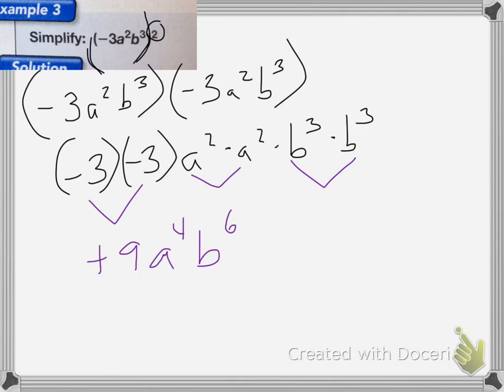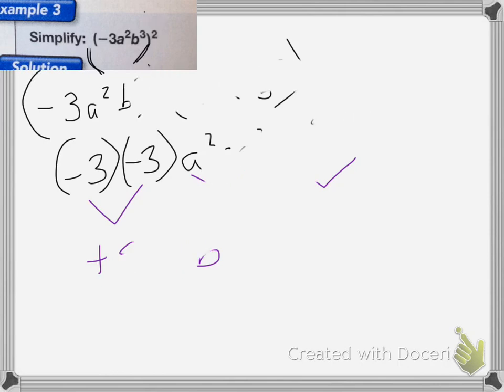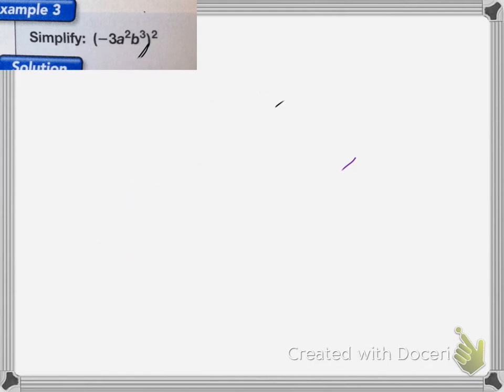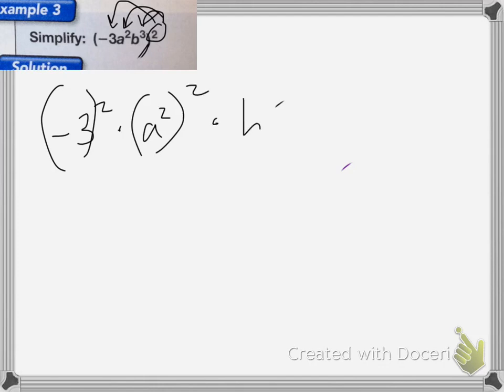The other way you can do this is to apply exponent rules. So this squared is going to have to apply to each of these numbers. So I'm going to end up with negative 3 squared times a squared squared times b cubed squared.